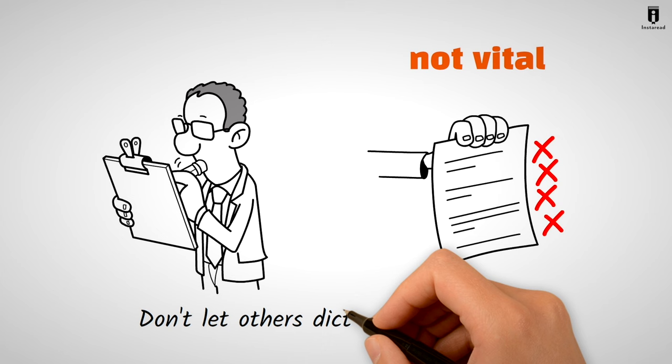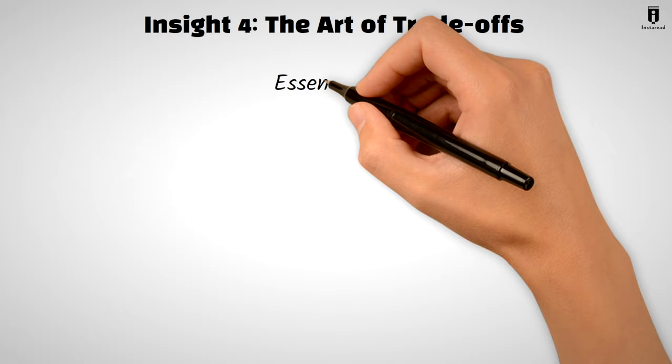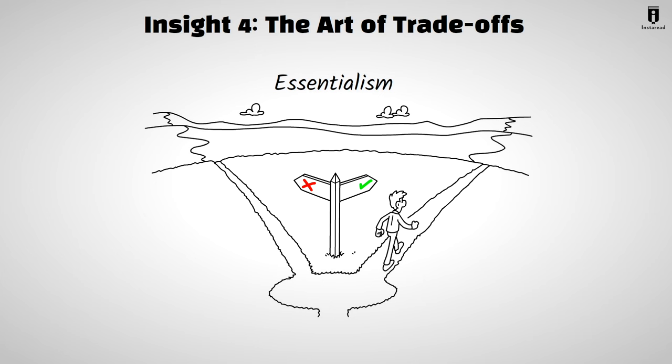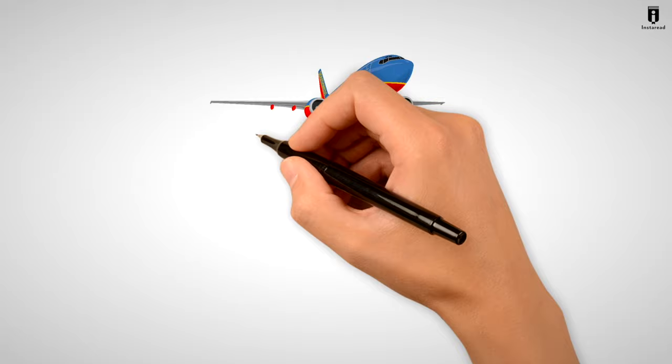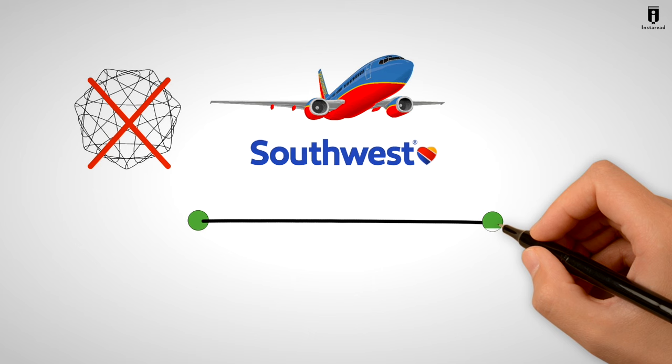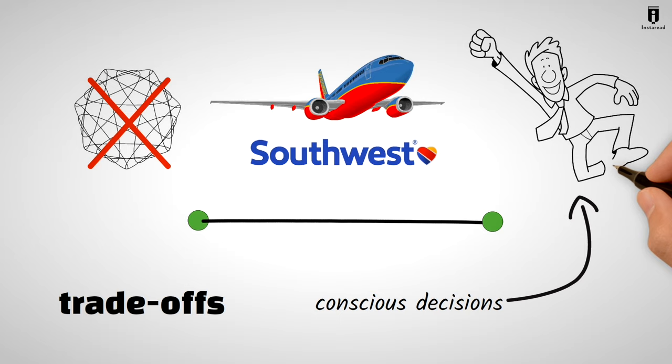Insight 4. The Art of Trade-Offs. Essentialism requires us to make trade-offs. Sometimes you must abandon goals that, while nice to have, aren't vital. This preserves your resources and energy for what truly matters. Businesses like Southwest Airlines thrived by eliminating non-essentials. They focused on point-to-point service, cutting out unnecessary routes. Remember, trade-offs are conscious decisions that lead to sustainable success.